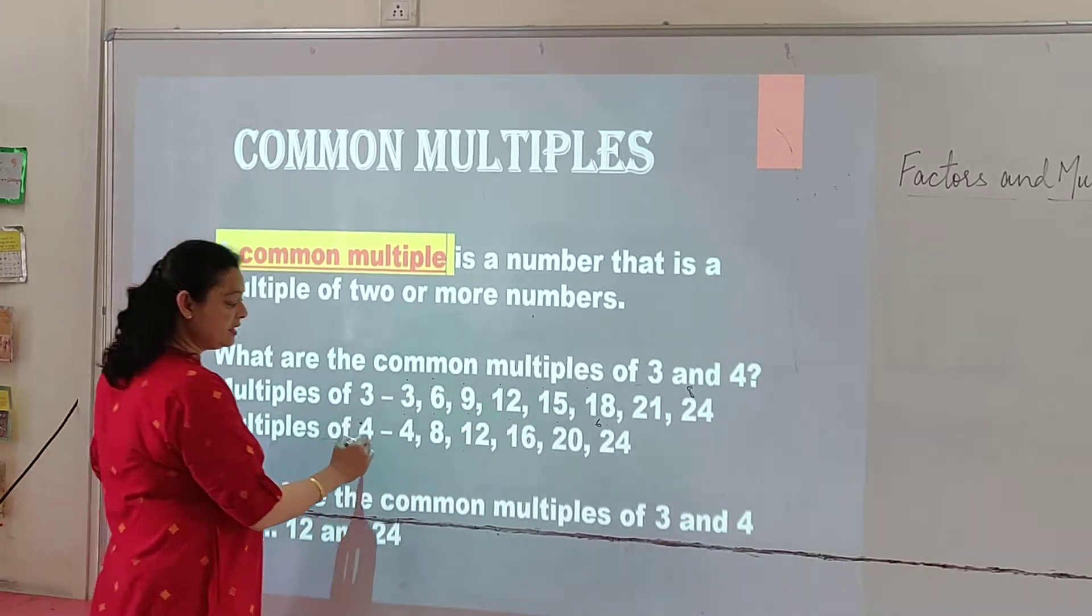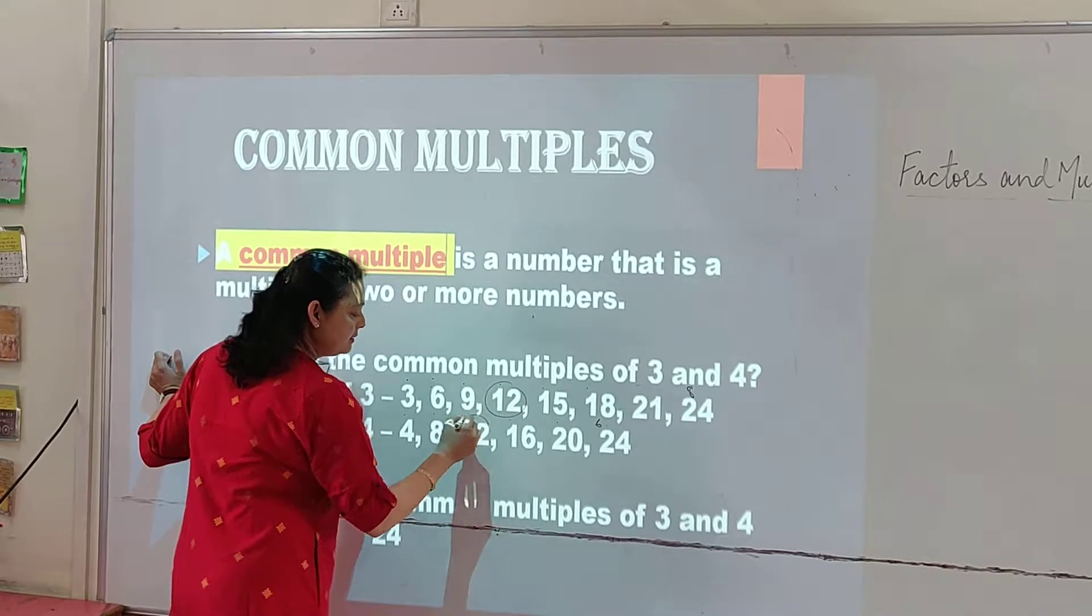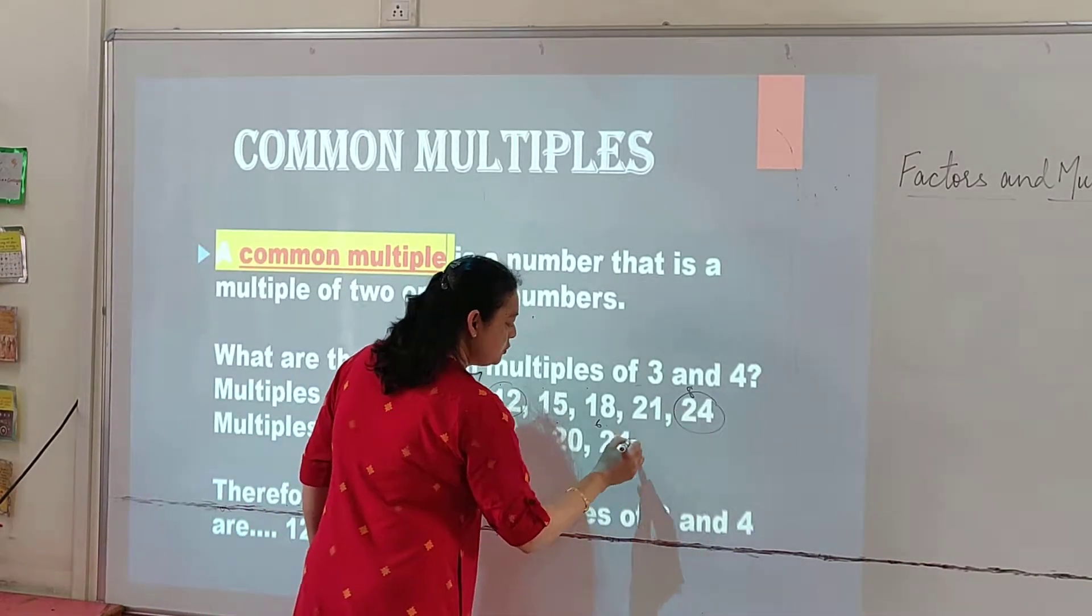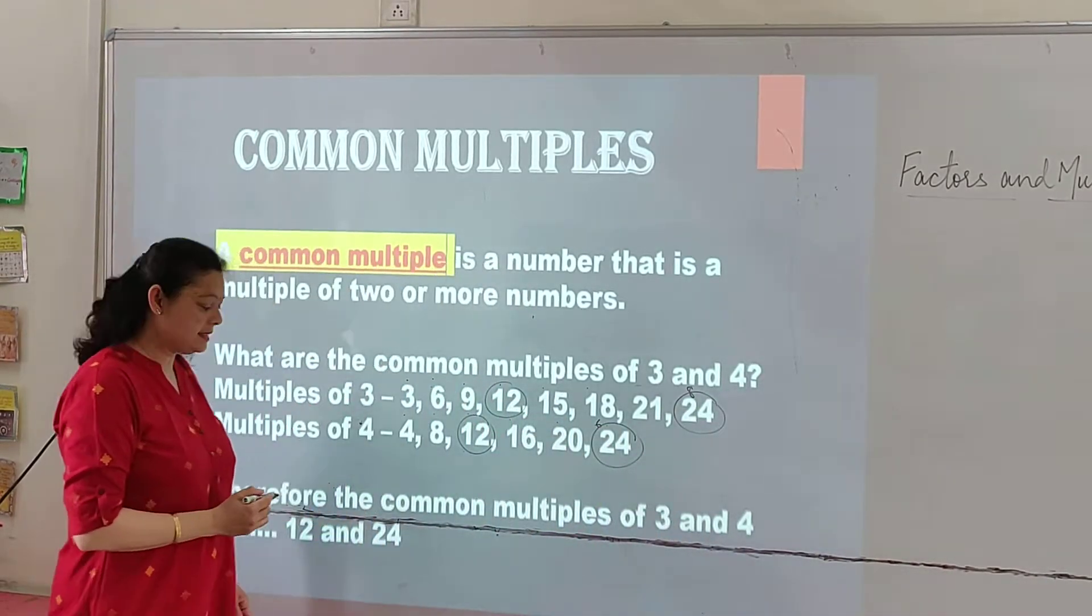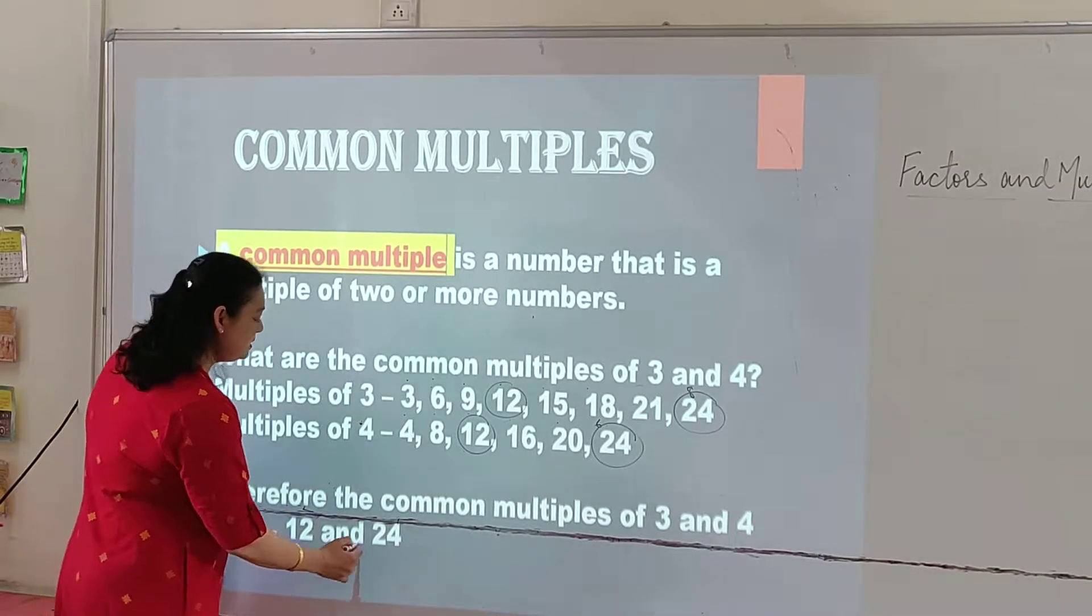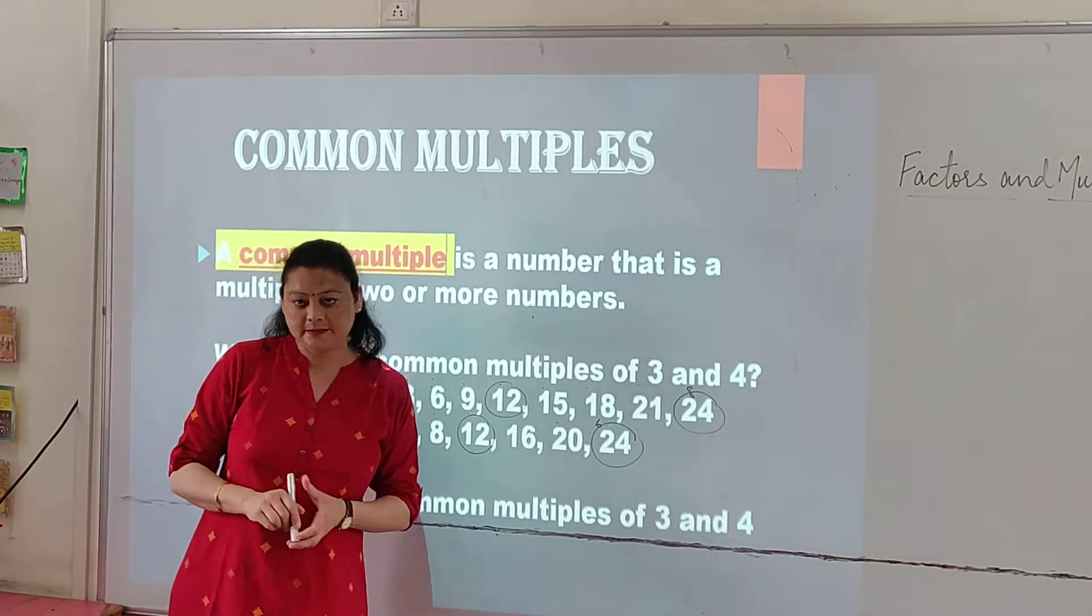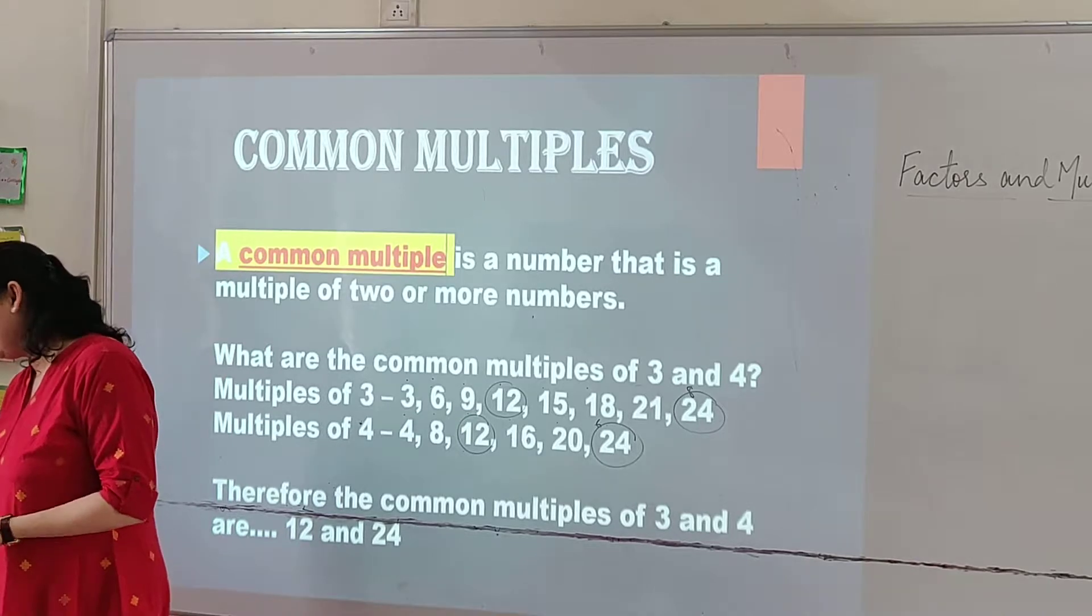Now we will find out the common multiples. The first common multiple is 12 here and the second multiple is 24. So these two are the common multiples and this is the way we find out the common multiples. I hope you understood.